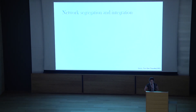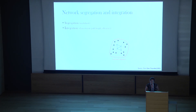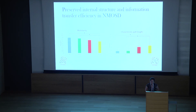Another way to examine the network using graph theory is by looking at its segregation and integration properties. Segregation — the ability for specialized processing to occur within densely interconnected groups of brain regions — can be measured using modularity. Integration — the ability to rapidly combine specialized information from distributed brain regions — can be measured using characteristic path length, which is the average shortest path between any two regions in the network, on which metrics such as efficiency are based. These metrics reveal a different pattern in which both MS background groups show reduced modularity and longer path lengths and lower efficiency, while the NMOSD group remains remarkably preserved in these properties.